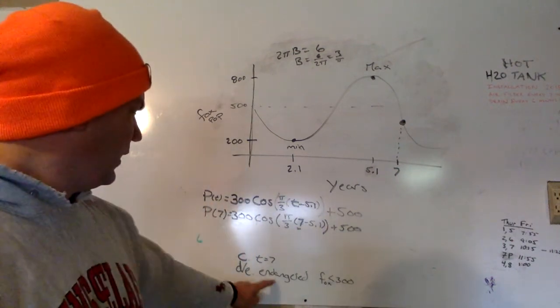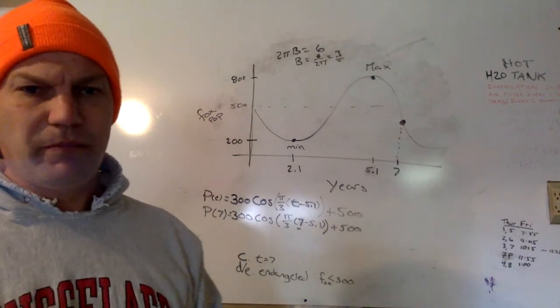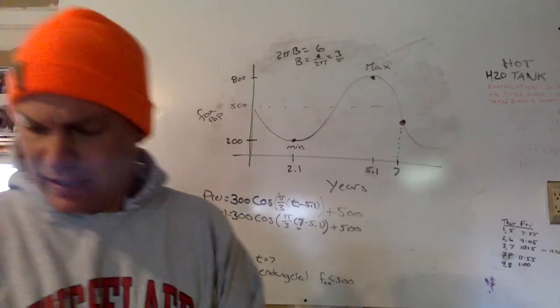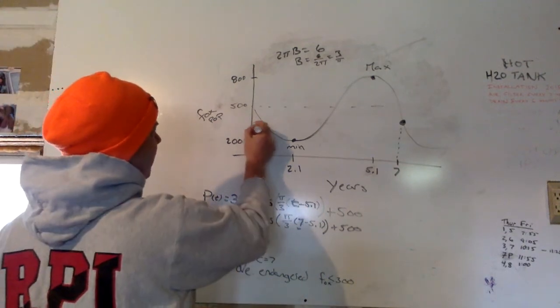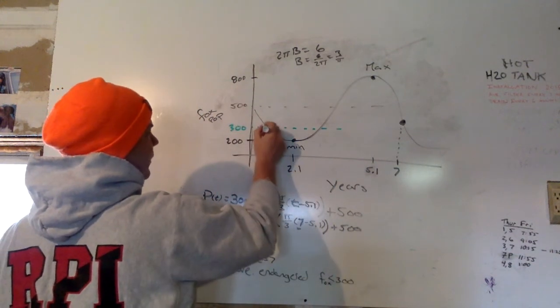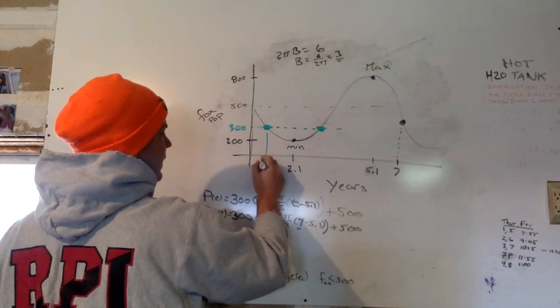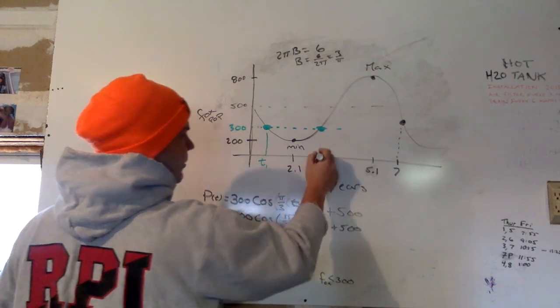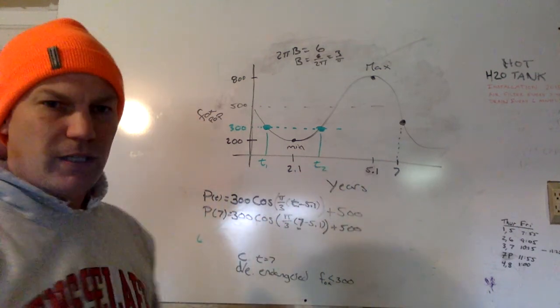And then the last one, it says, when does the fox population become endangered? And it defines endangered as the time when the fox population is less than 300. So I'm guessing that happens between here and here. And my job is to find, I'm going to label them as t1 and t2. I need to find t1 and t2.